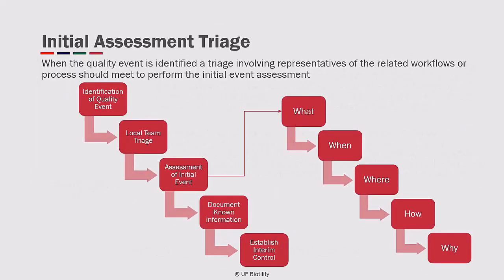When a quality event is identified and during the initial assessment, there needs to be a process known as a triage. This illustration provides a step-based approach for what actions should occur when a quality event is identified. You need to consider who is on the local triage team — this could be the operators, analysts, area supervisor, or quality operations personnel.